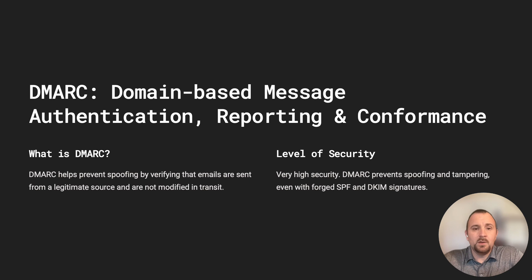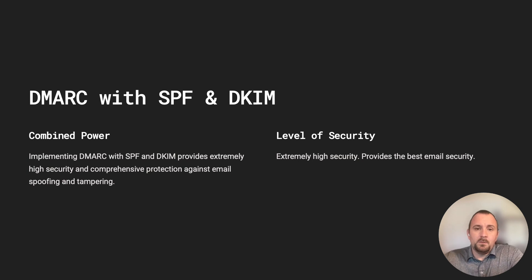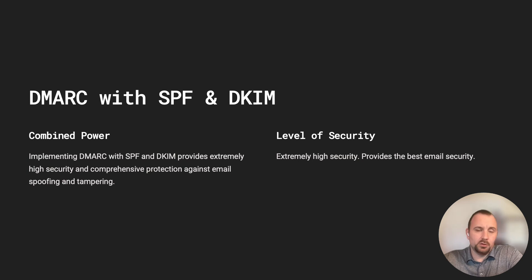Now for the powerful trio — DMARC plus SPF and DKIM equals enhanced email security. When implementing DKIM with SPF and DMARC, you're creating a robust defense against email threats. By enforcing policies on messages that fail your SPF and DKIM, DMARC prevents attackers from sending emails that appear to come from legitimate domains — including lookalike domains using similar fonts to make the domain look legitimate. The combination of SPF, DKIM, and DMARC ensures that emails are authenticated through multiple channels, making it extremely difficult for attackers to spoof or manipulate your email content.